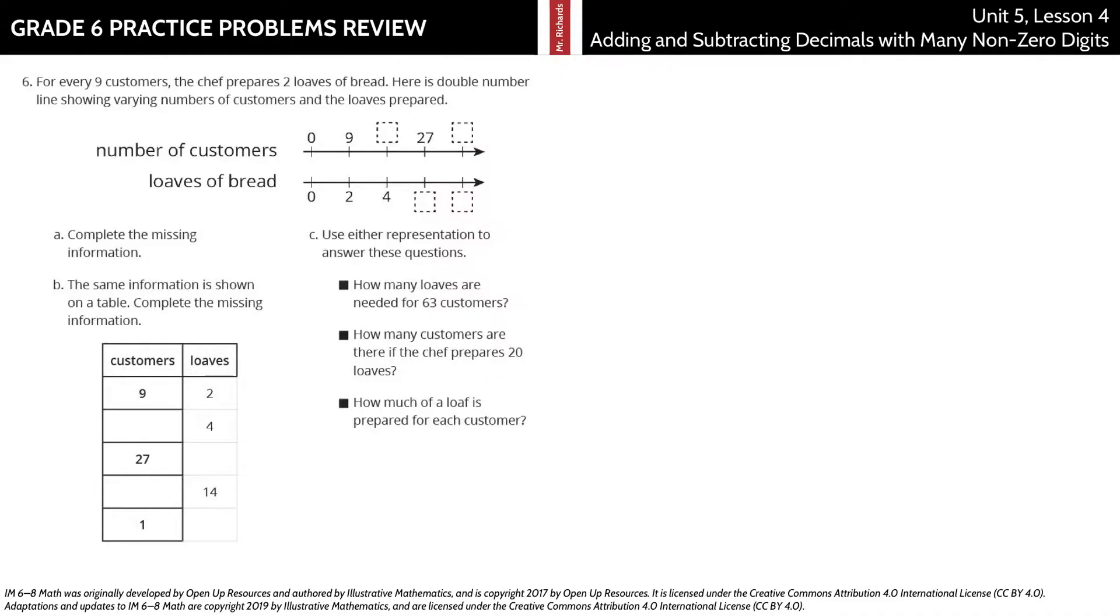And our last question. For every nine customers, the chef prepares two loaves of bread. Here is a double number line showing varying numbers of customers and the loaves prepared. Complete the missing information.